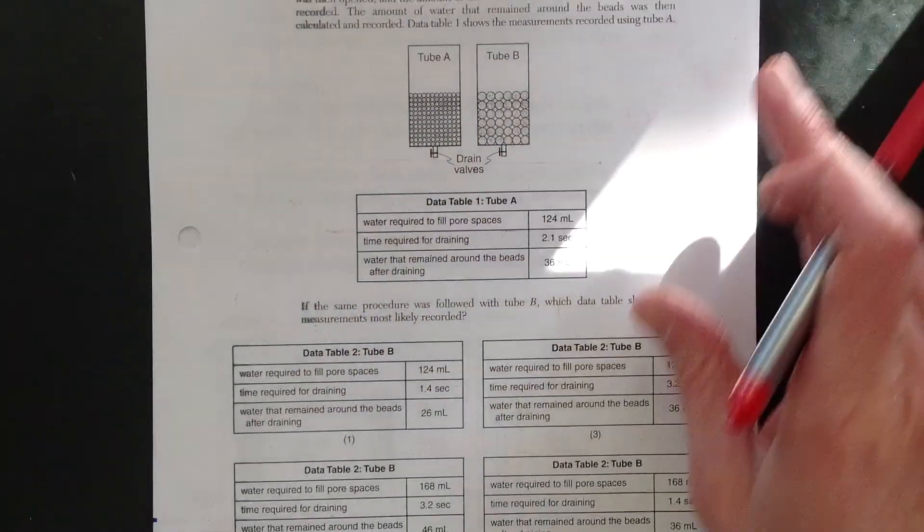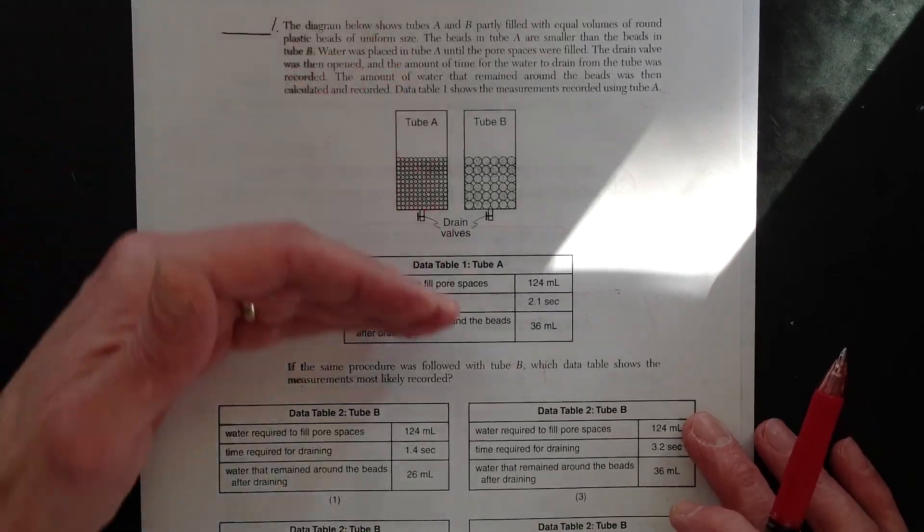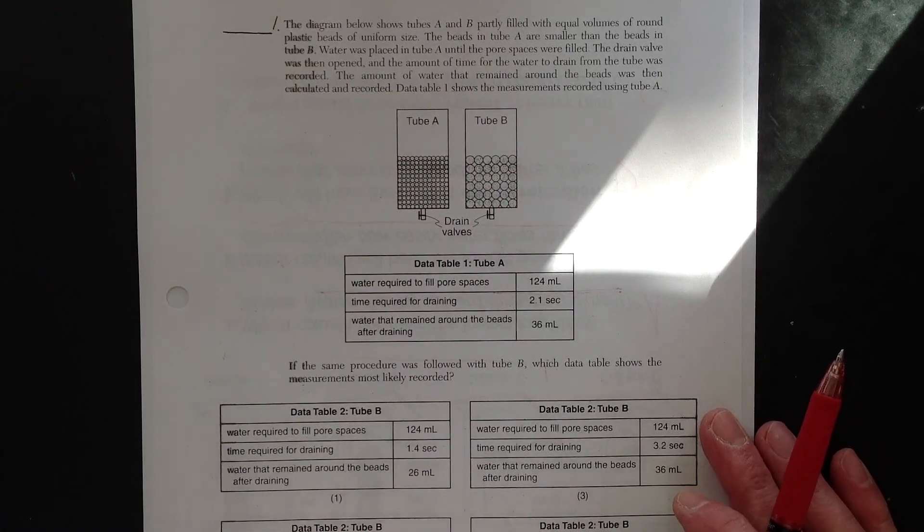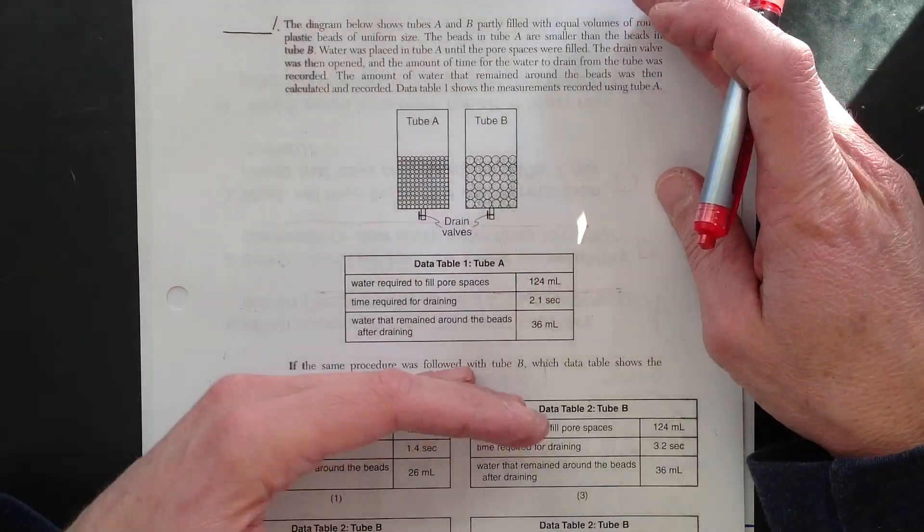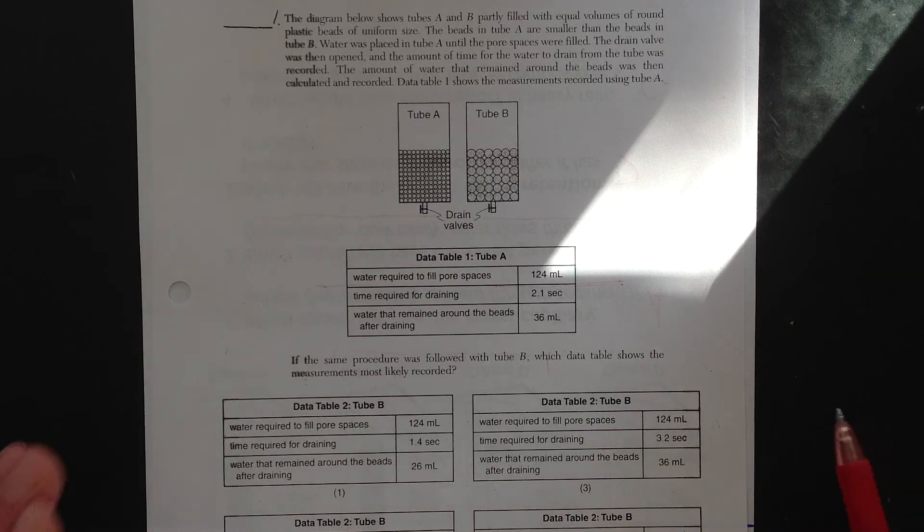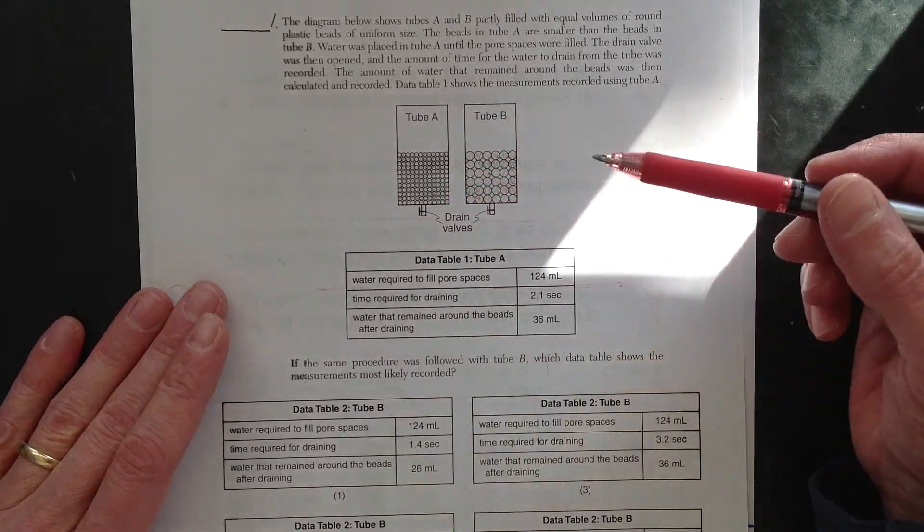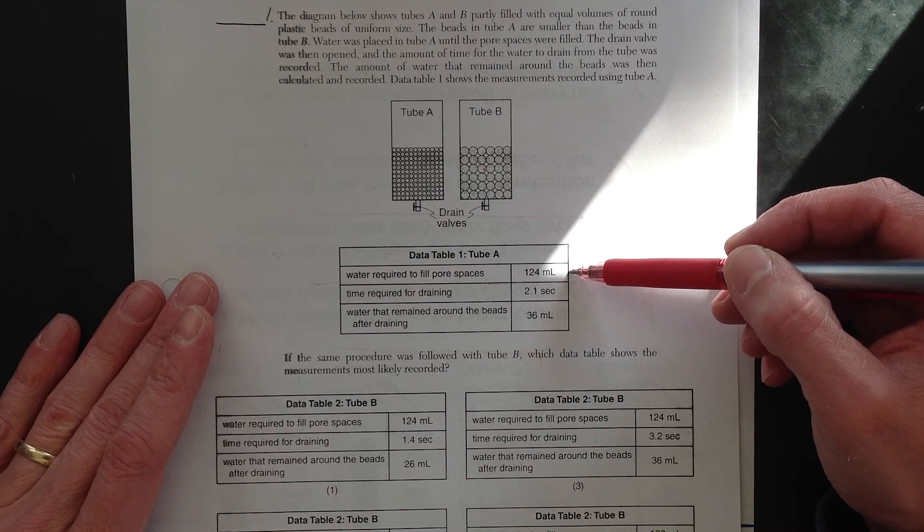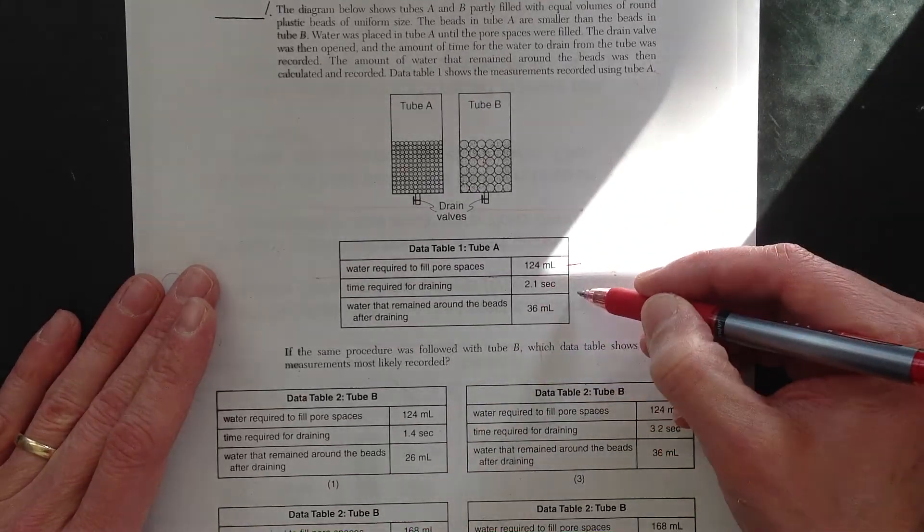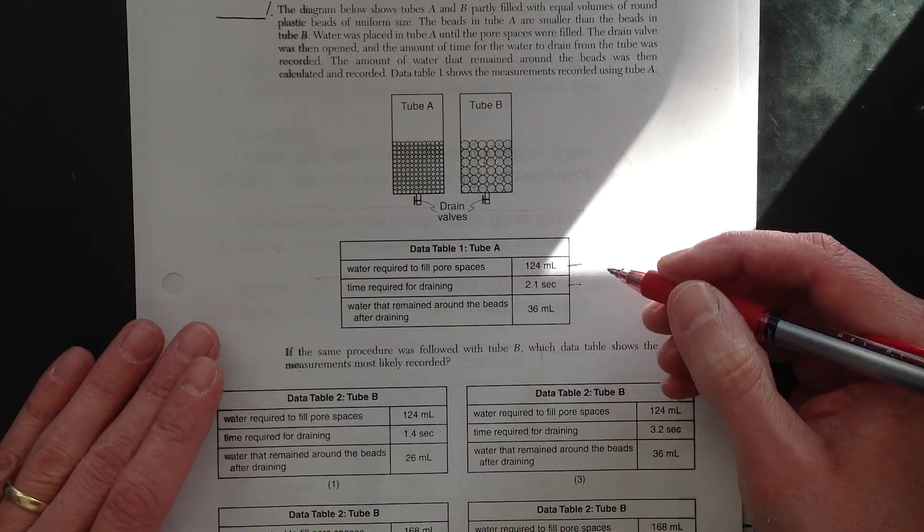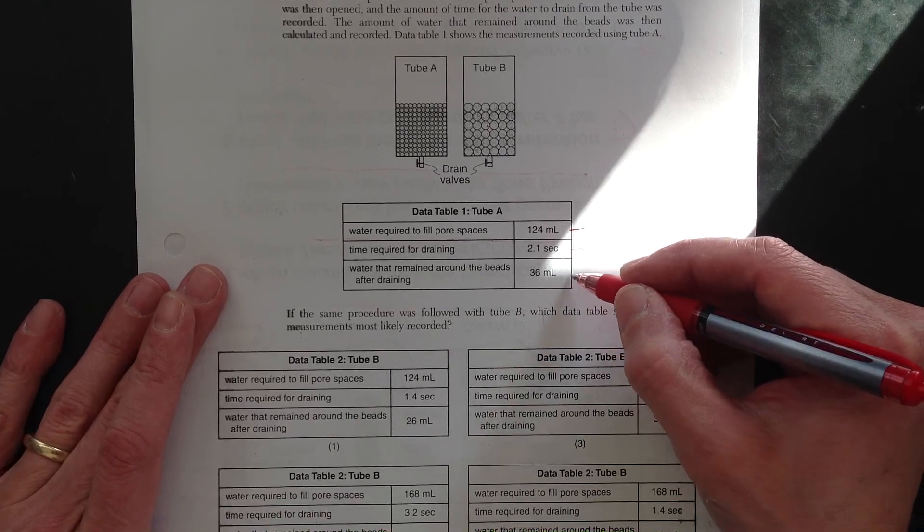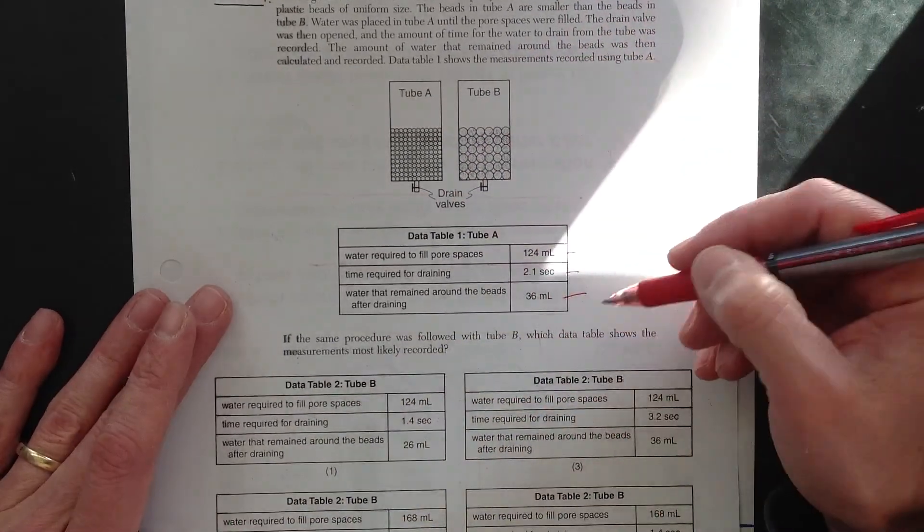On the back. Now on the back. Check this out. This is hefty. This is one big question here. Okay. There's a lot to this. I'm not going to read through the whole thing, but definitely read through the whole entire thing. You really have to understand all this. This is going to put a lot of effort in just to get this one question right. But there's a lot to it. So tube A, tube B. This is for tube A. It tells you water required to fill the pore spaces. That's basically porosity here. This is porosity. Time required for draining. That's like infiltration time. Permeability time. Water that remained around the beads after draining. That's water retention.